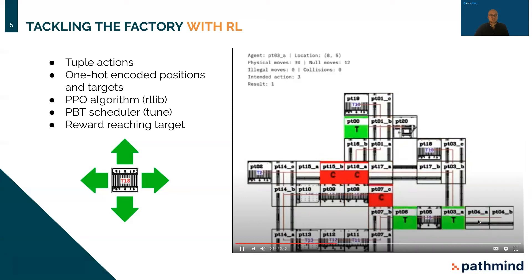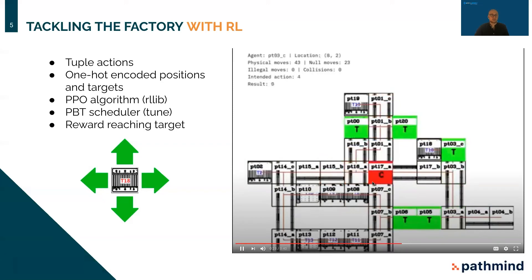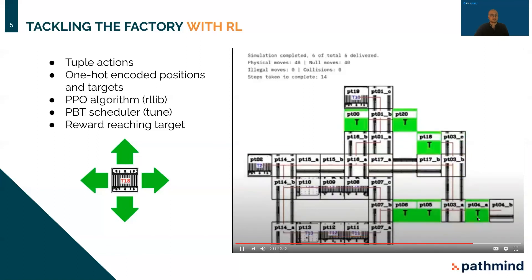Once the car at point 18 is there, it starts to move back and tuck into point 18. Now the car at 15B can move because its path is free. It goes to the right to 17B, 3B, 3A, and then 4A, which is the final destination.